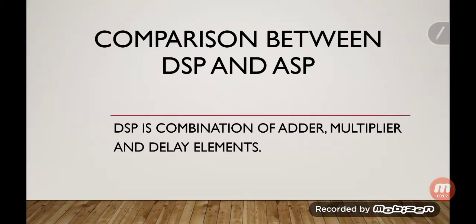The topic I am going to discuss today is a comparison between DSP and ASP. DSP is Digital Signal Processing and ASP is Analog Signal Processing. DSP involves signal processing done by a combination of adder, multiplier, and delay elements — only these three elements.